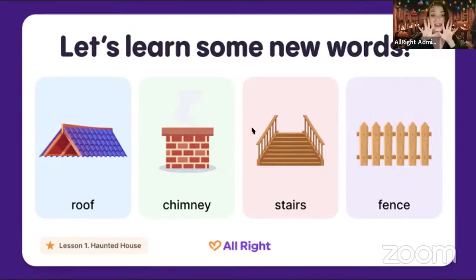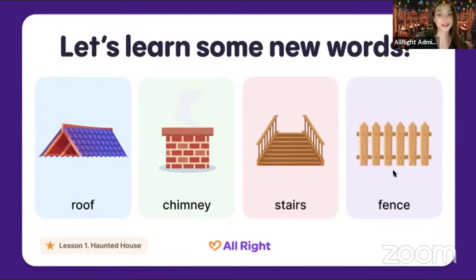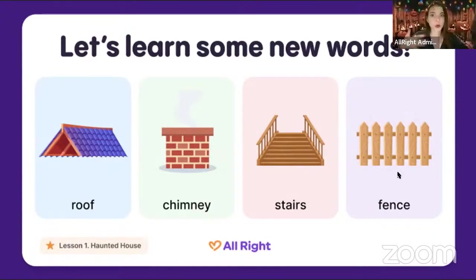The next word — repeat after me and say it out loud, very loud: 'stairs!' Do you have stairs in your house? Can you walk upstairs or downstairs? When you go up you say 'I go upstairs,' and going down is 'downstairs.' And the last word for today: looking at this picture, it's a 'fence.' One more time — fence! You can find the fence around the house.